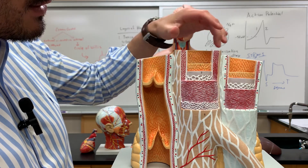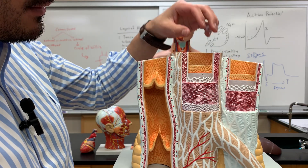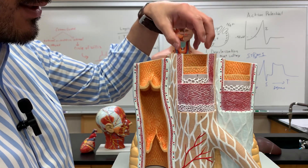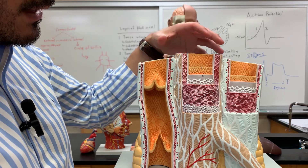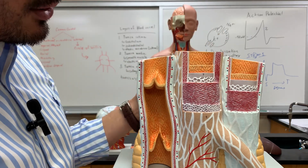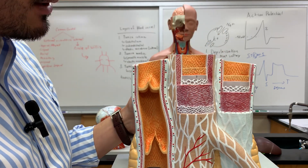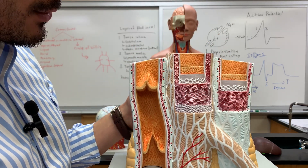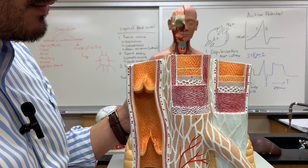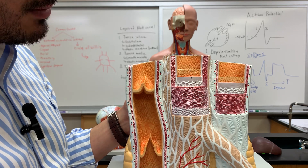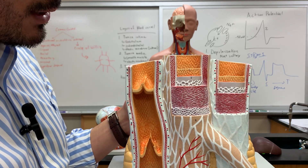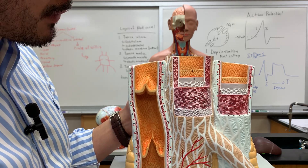Now let's go over some of the different layers here for the artery and then the veins. There are three main layers, and they are known as their tunics. You have the tunica intima, the tunica media, and the tunica externa.